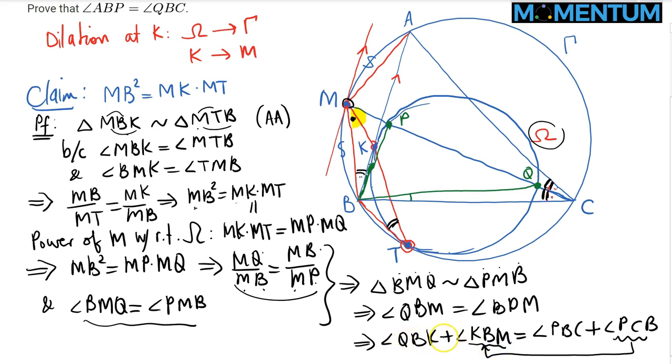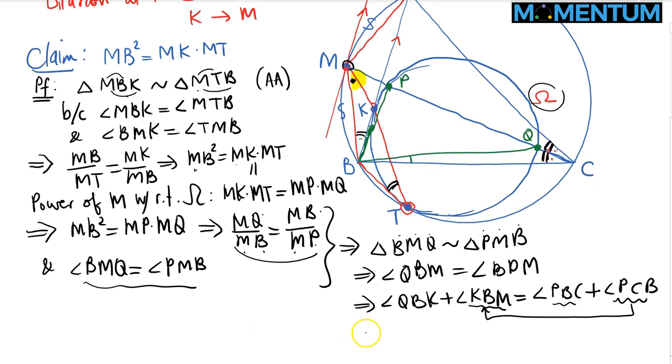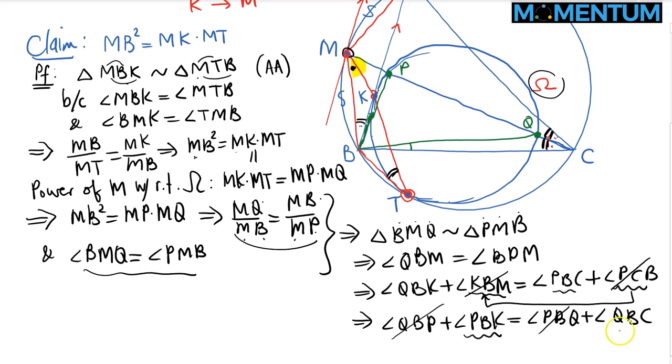Therefore, QBK is congruent to PBC. I can split them into two pieces. Angle QBK is angle QBP plus PBK, and that equals angle PBQ plus QBC. Since PBQ is common for both, they cancel out. We get PBK, which is the same as PBA, equals QBC.